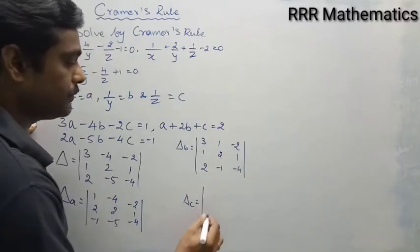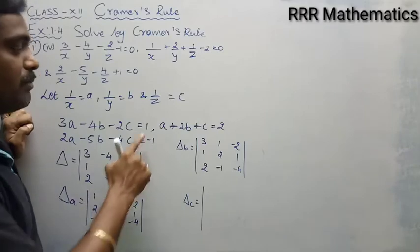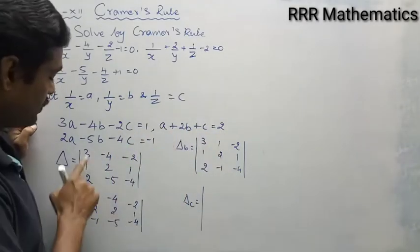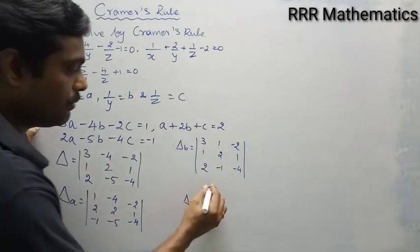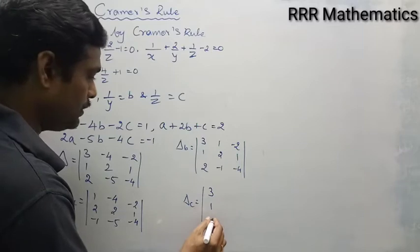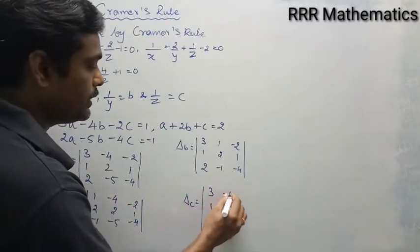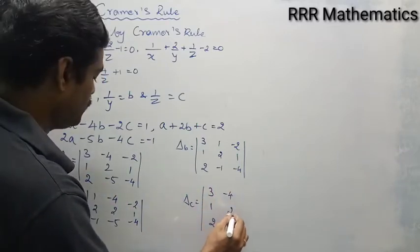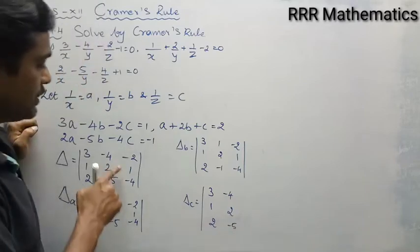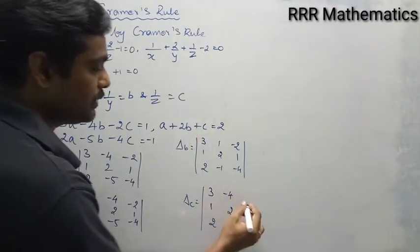Then Delta_c: replace the third column by the constant values 1, 2, minus 1. Write the first column as 3, 1, 2 and the second column as minus 4, 2, minus 5. Replace only the third column by 1, 2, minus 1.